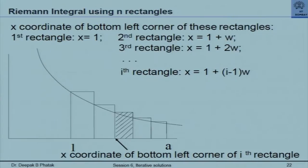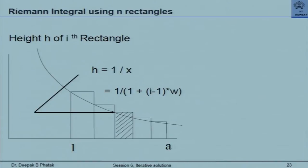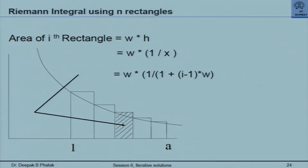Coding is actually a very small portion of the mental activity. We show that if there are n rectangles of equal width, the width is (a−1)/n simply. Using n rectangles — this method is called Riemann integral — you know the x-coordinate of the bottom of the i-th rectangle. First rectangle: x is 1. Second: x is 1 plus w. Third: x is 1 plus 2w. So the i-th rectangle will be at x = 1 + (i−1)w. The height of the i-th rectangle equals the value of the function at that point, which is 1/x, so the area of the i-th rectangle is w × (1/(1+(i−1)w)).